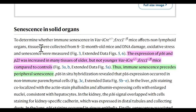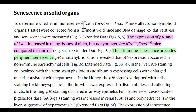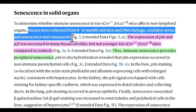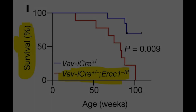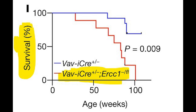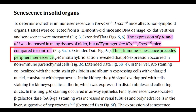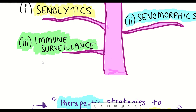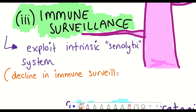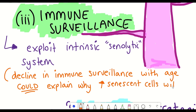The interesting finding was that the aged immune system also drove senescence and loss of tissue homeostasis in non-immune organs. In the figures shown, you can see increased P16 and P21 expression in many different tissue types compared to controls in the old ERCC1-defective mice. This also correlated with a reduced lifespan. It suggested that immune senescence was preceding peripheral senescence — going back to the idea of reduced immune surveillance correlating with increased presence of senescent cells.